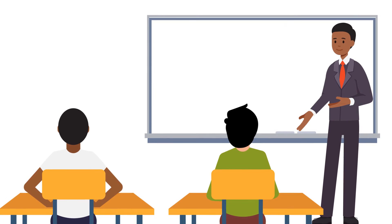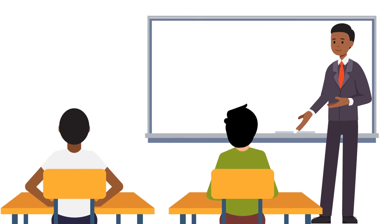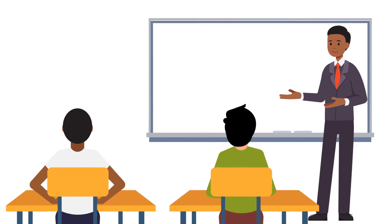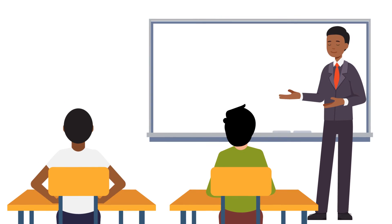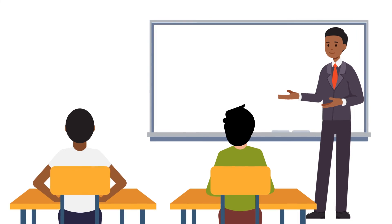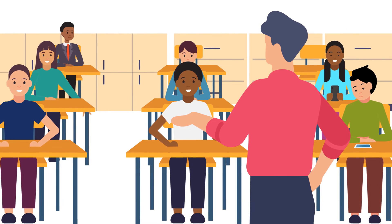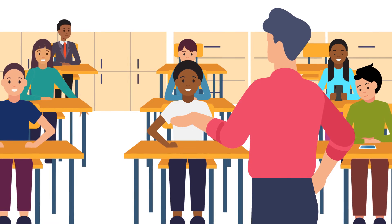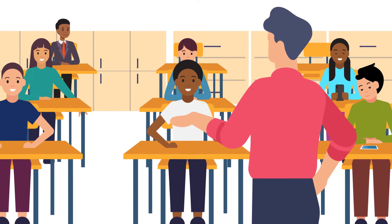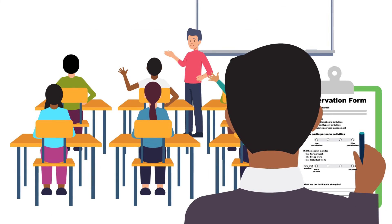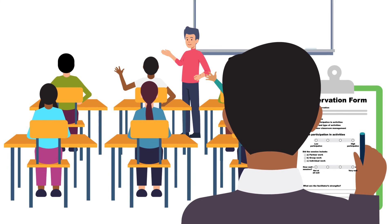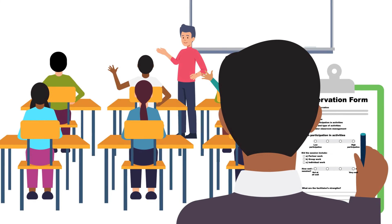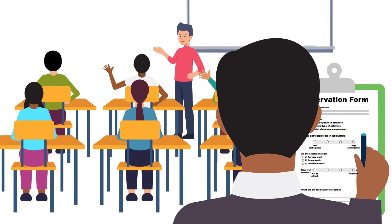During live observations, observers might consider introducing themselves and explaining they are there to watch and learn about the program, but they should try not to influence the session. For example, observers might sit in the back of the room to reduce distractions to the youth. Observers should fill out the form in real time and not wait until the session is over, as this minimizes the chance observers will forget to record key data.